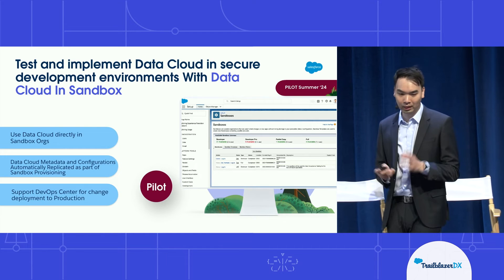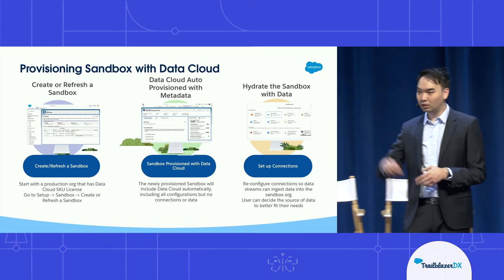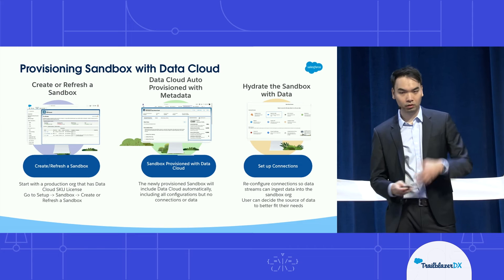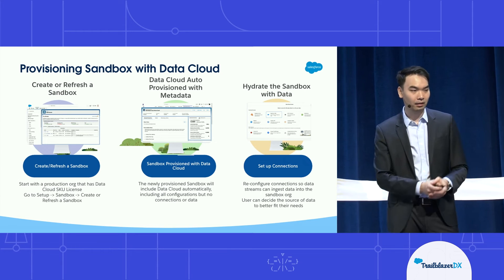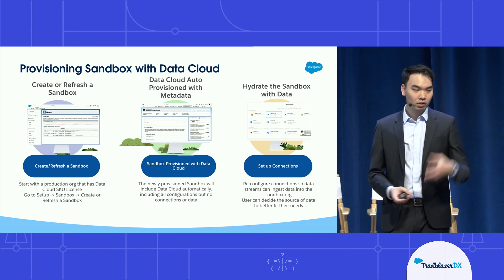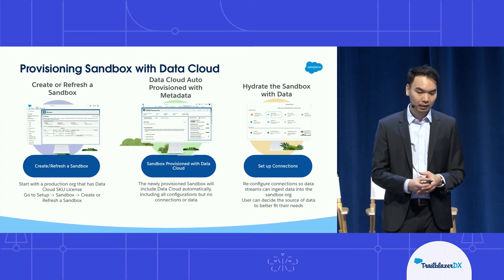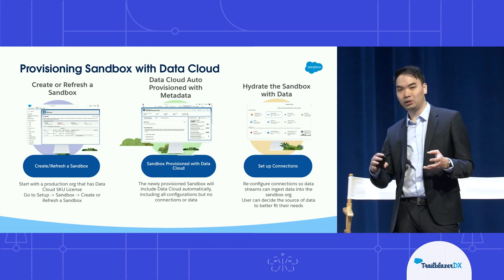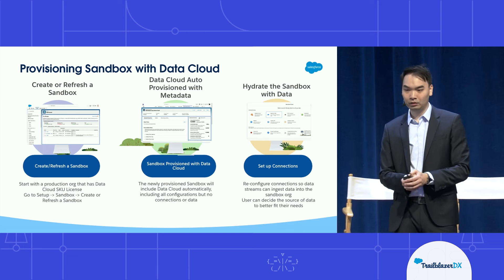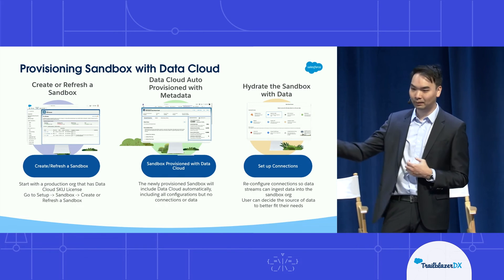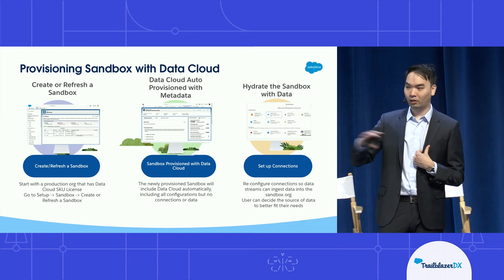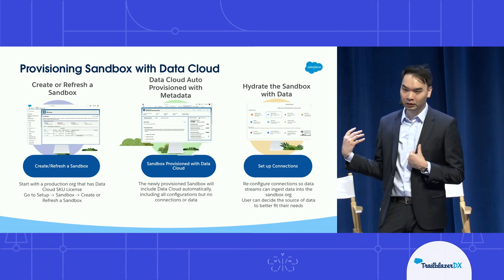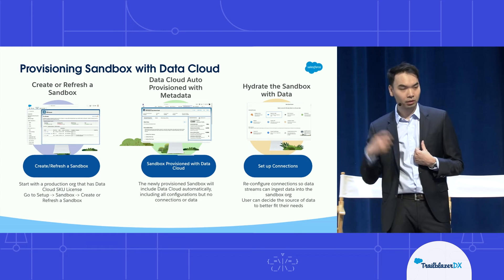Just to quickly summarize on the Sandbox part — how you'll be getting access to it: you'll go to Setup within your production org, and if you have Data Cloud and pilot access, when you create a new Sandbox or refresh the Sandbox, Data Cloud will be provisioned in that Sandbox org and will bring over your configurations — your data streams, calculated insights, and resolution rules. You'll then go back to set up connections, since we won't carry over your security tokens or authentication. Once you reestablish the connection, the stream will ingest data into the Sandbox. You can also create new streams if you wish.